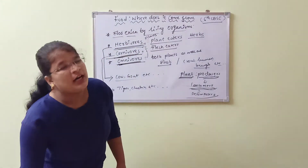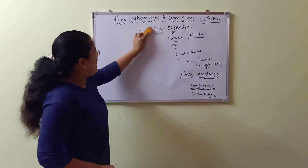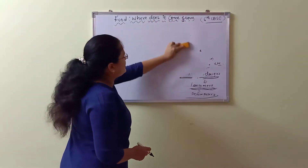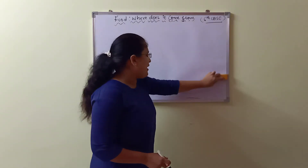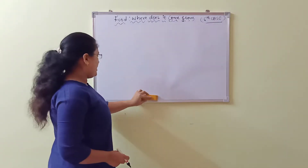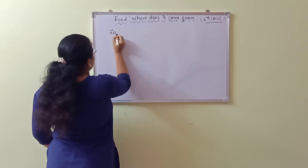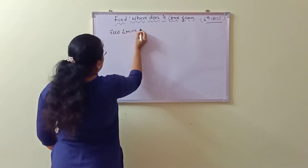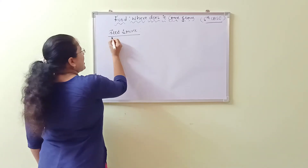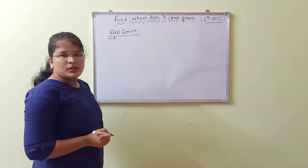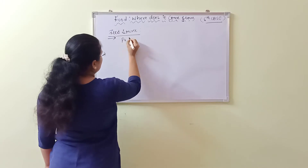Now let us see what is the source of food. Plants are the main and first general source. Without plants, we would not have anything on this earth — no animals, no food. The sources of food from plants are categorized into three types: pulses, cereals, and vegetables.